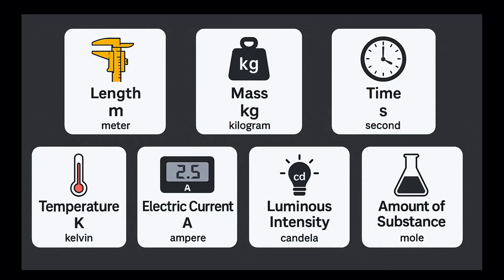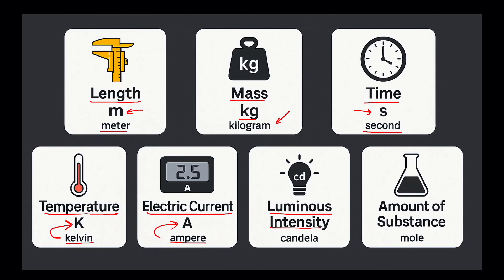Let's revise the seven fundamental units once again. First: length — SI unit is meter, symbol small m. Second: mass — SI unit is kilogram, symbol small kg. Third: time — SI unit is second, symbol small s. Fourth: temperature — SI unit is Kelvin, symbol capital K. Fifth: electric current — SI unit is ampere, symbol capital A. Sixth: luminous intensity — SI unit is candela, symbol small cd. Seventh: amount of substance — SI unit is mole, symbol small mol.